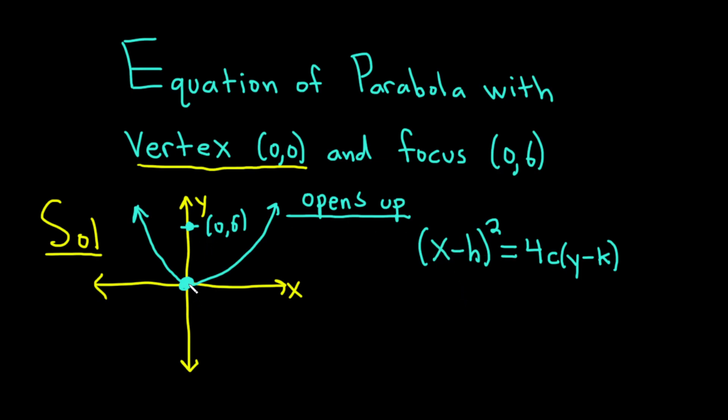In this case, we already have the vertex. It's (0,0). That's going to be our h and our k. So let's go ahead and replace h and k with 0, 0 in our formula. So it will be (x - 0)² equals 4c times (y - 0). But this is the same thing as x² equals 4cy. Very nice.